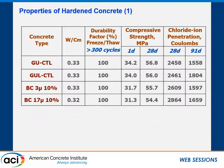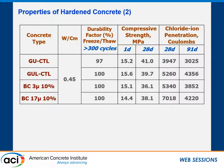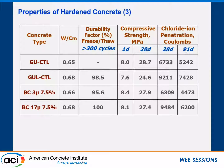Compressive strength at one day and 28 days, and Coulomb chloride permeability values, are all very similar across the GU, GUL, and the two limestone-added mixes. At a 0.33 water-to-cement ratio with 10% straight replacement, there is not much difference in compressive strength. The GU already has 5% interground limestone; the GUL has up to 15%, likely about 13% total for this particular Lafarge cement.